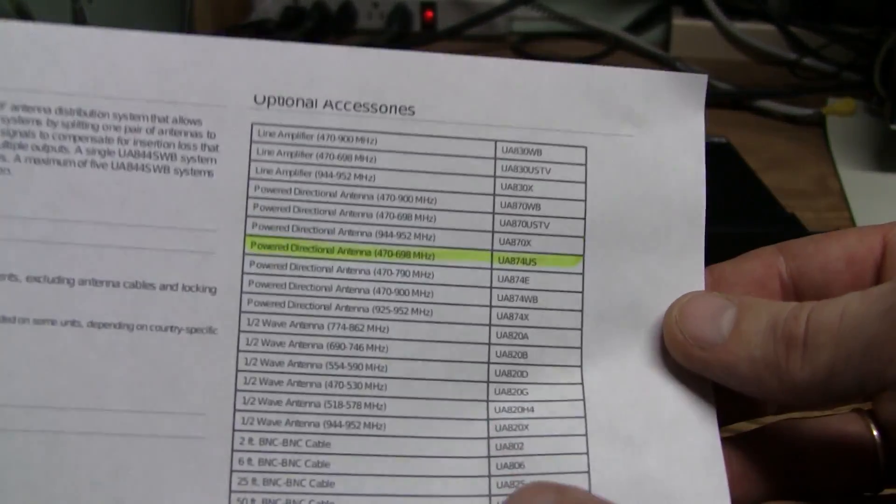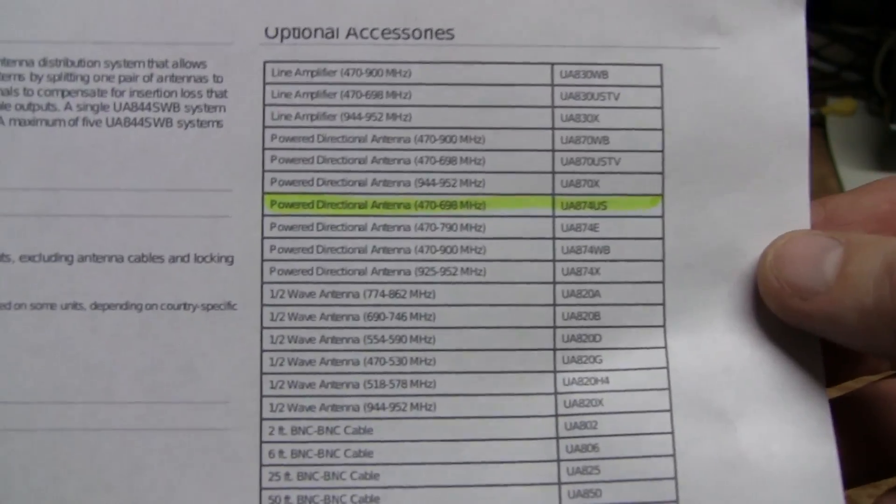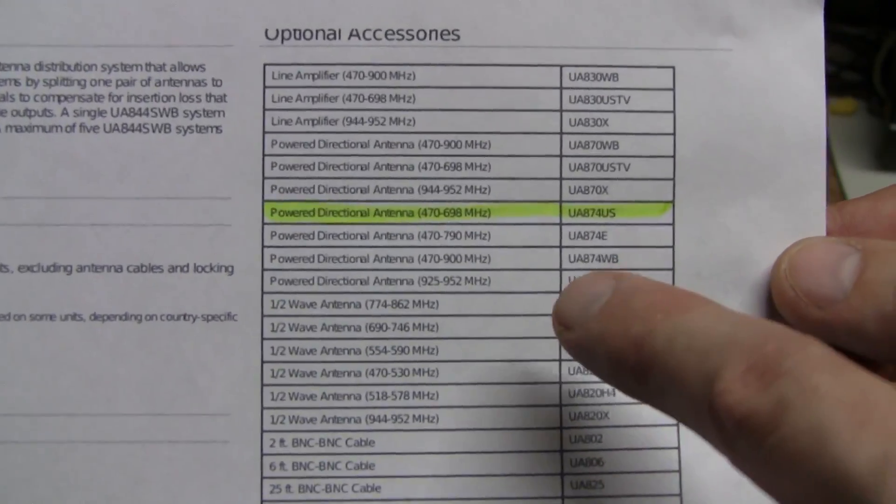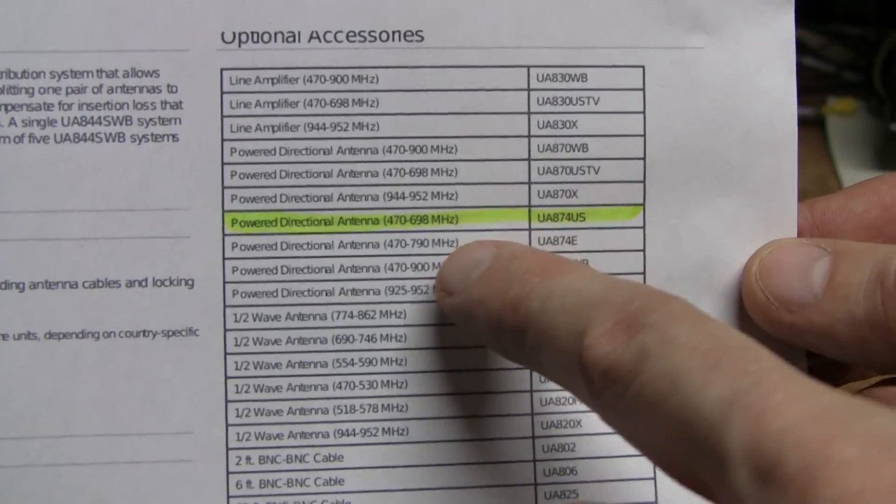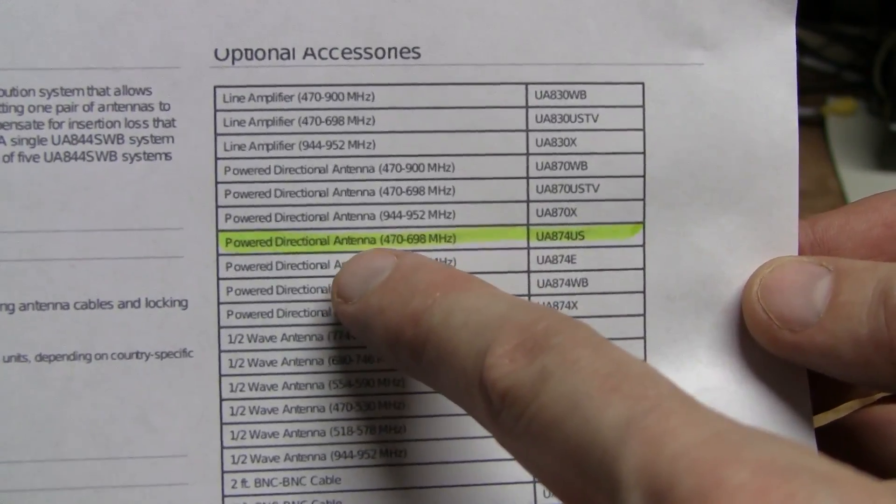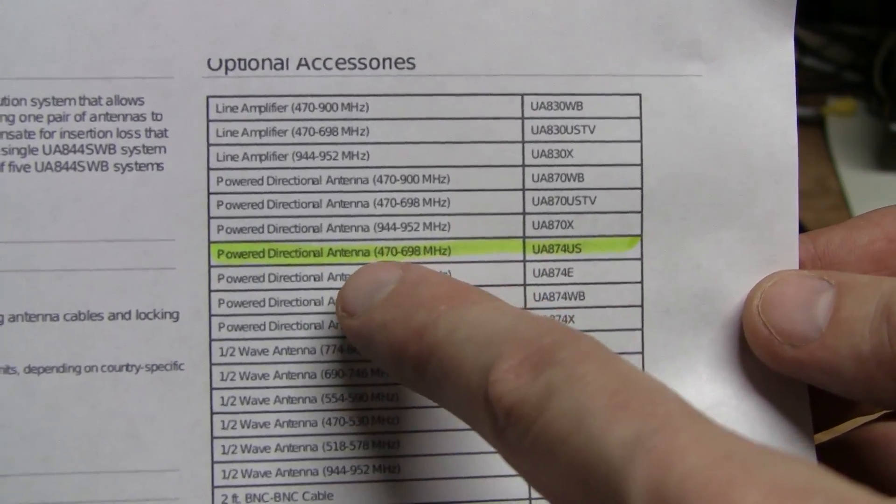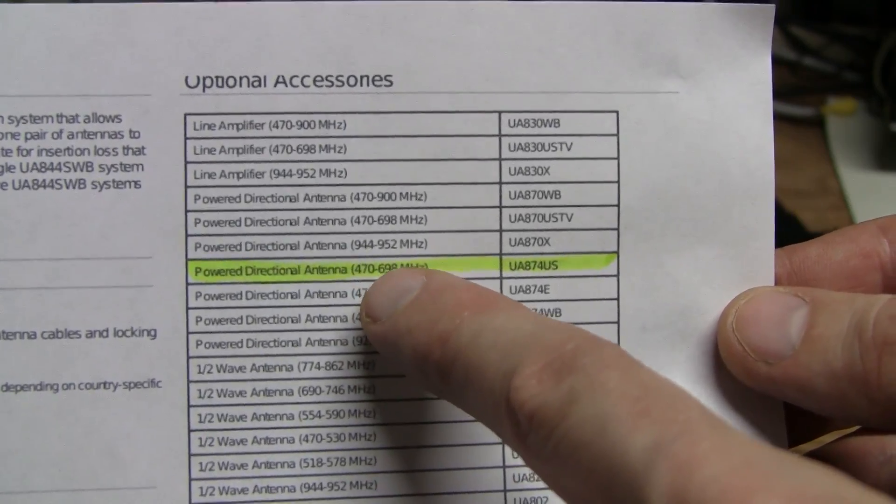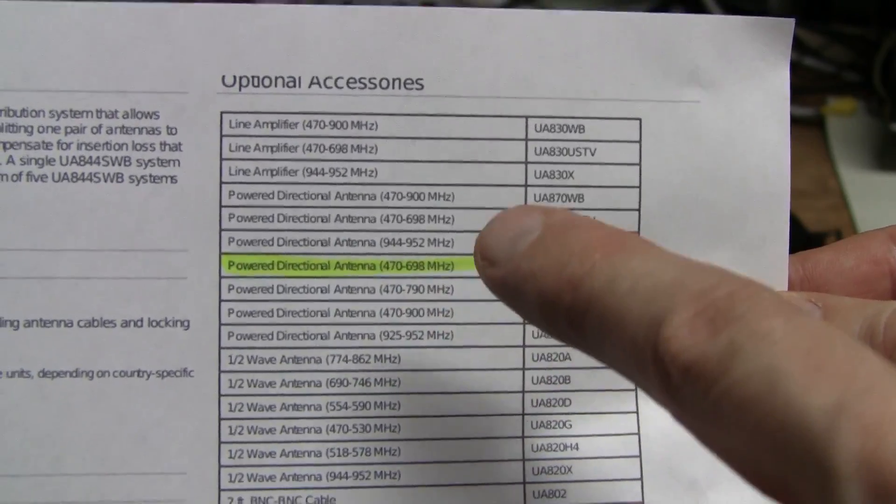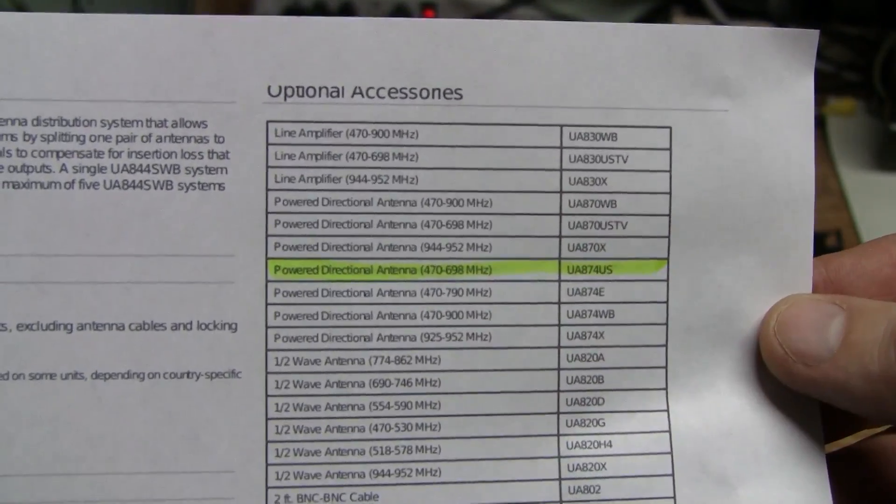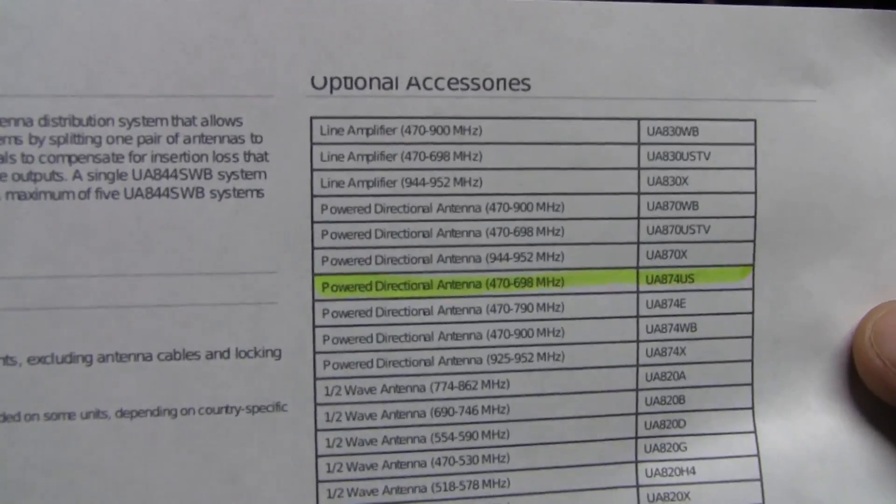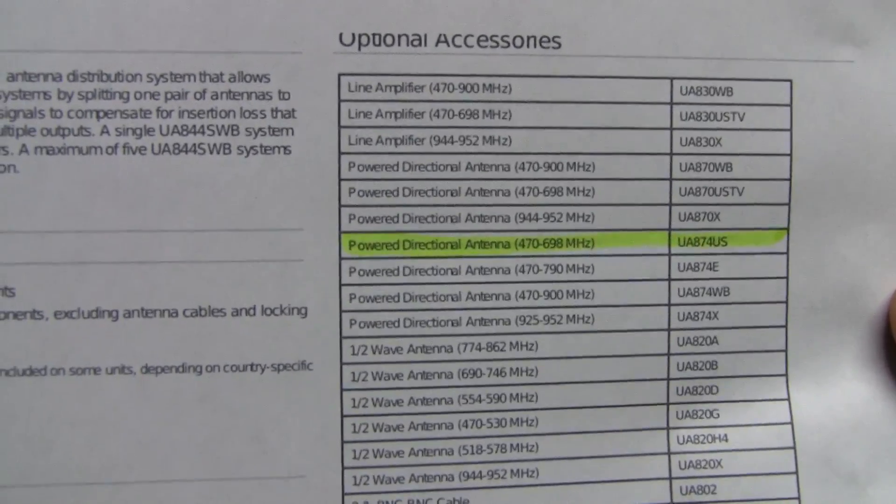And here I highlighted in the list of accessories an antenna for the US market. And here we have this frequency range from 470 to 698 MHz. And this is the legal range in the US, or at least was until recently.